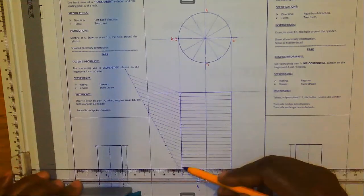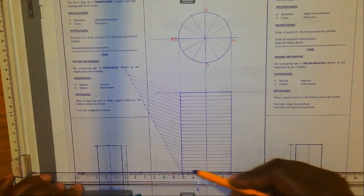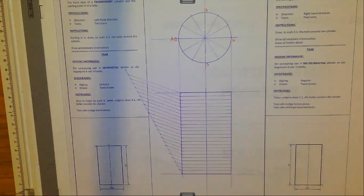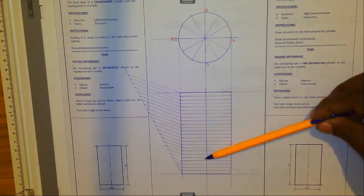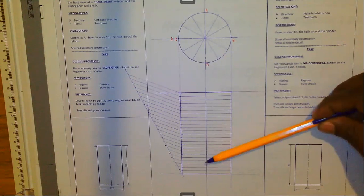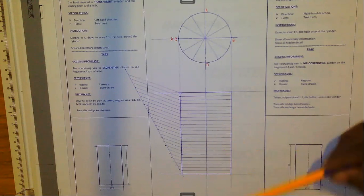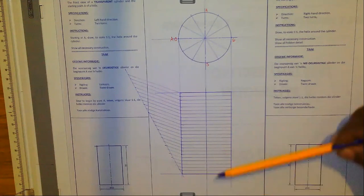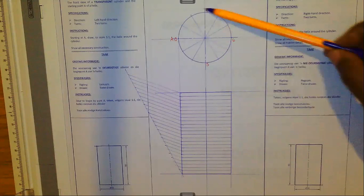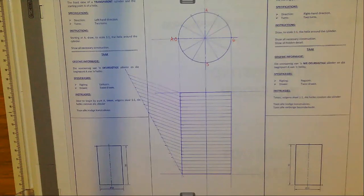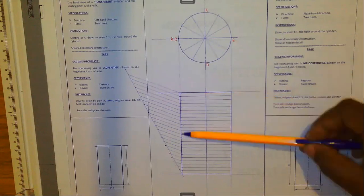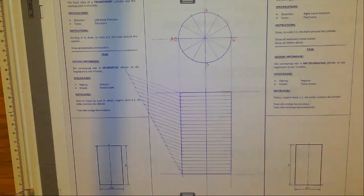All right. So now I've got the cylinder which is divided into 24 equal parts. Remember, one turn is 12 divisions. So if it is half a turn you have got 6 divisions. If it is two turns you have got 24. It also depends on the number of divisions you have made. For one complete turn you also need 12 divisions here; for two complete turns you need 24 divisions. The next thing is to bring these lines down quite faintly.